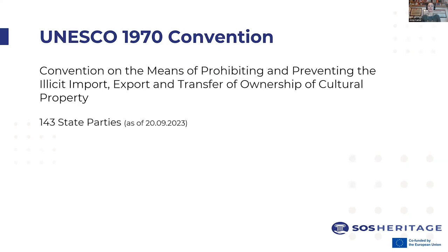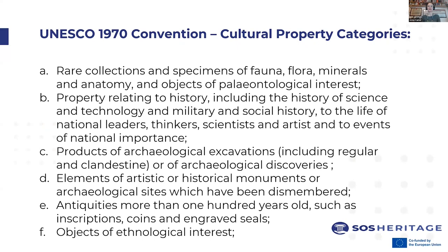We also have the UNESCO 1970 Convention — the Convention on the Means of Prohibiting and Preventing the Illicit Import, Export and Transfer of Ownership of Cultural Property. As of 2023, it has 143 state parties as members. This convention goes into more depth defining what movable cultural heritage actually is, including rare collections and specimens of fauna, flora, minerals and anatomy, and objects of paleontological interest.